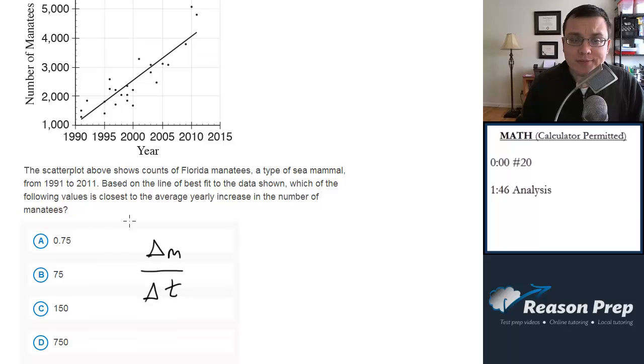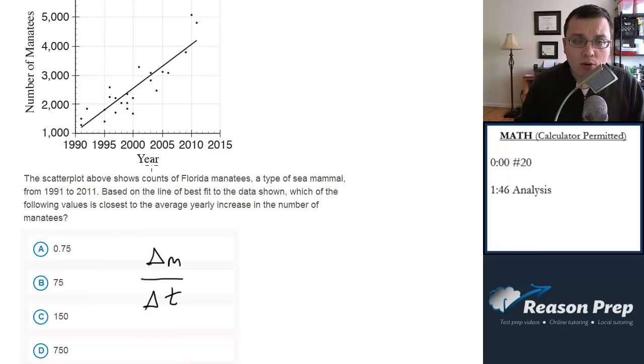Notice this is just the slope. This is just the change in the y coordinate over the change in the x coordinate. What we need to do is look at this line of best fit, find two points, calculate the slope, and we should get something pretty close to one of these choices.